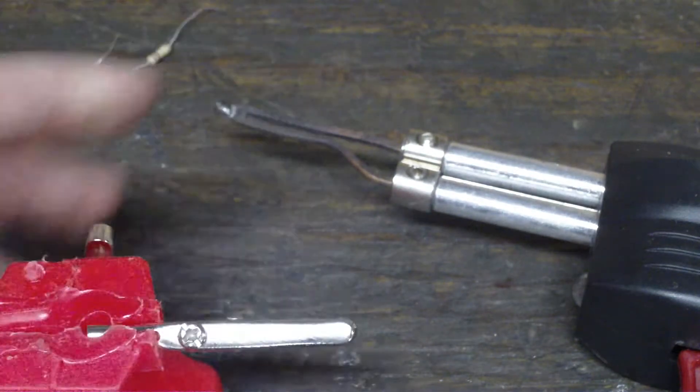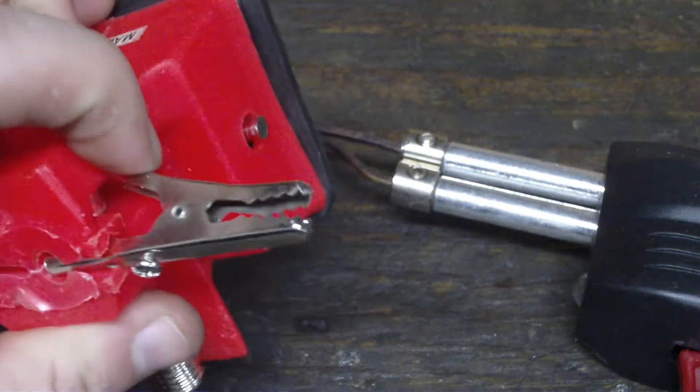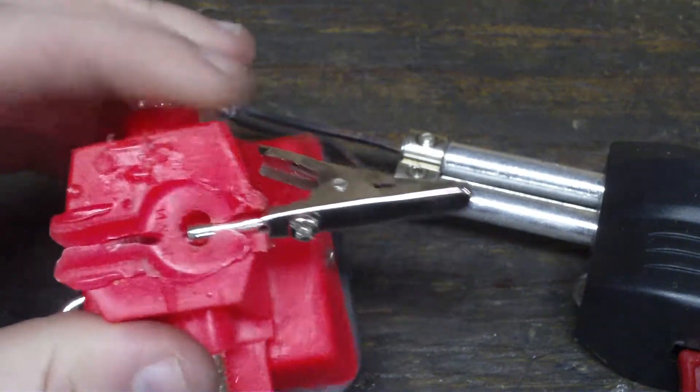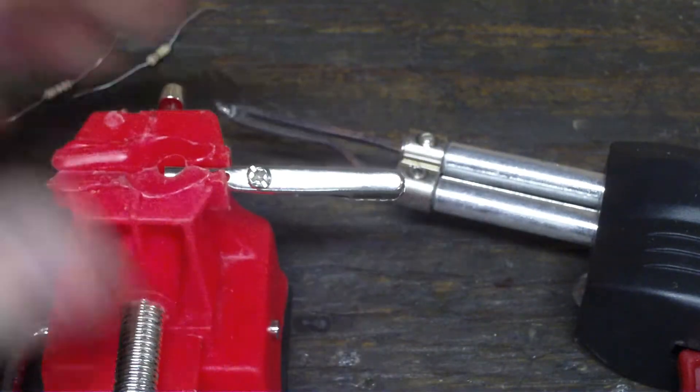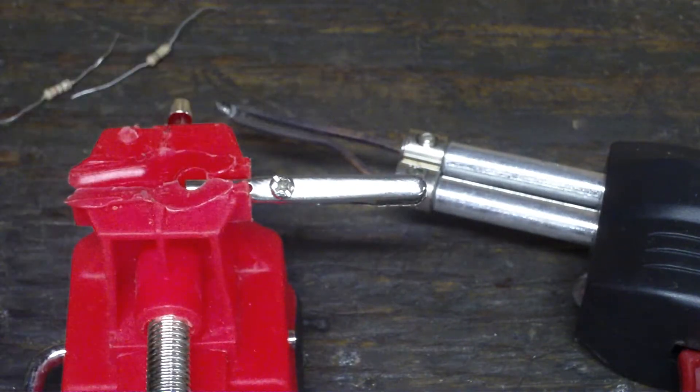Now I prefer to use a little vise like this, and this is an alligator clip to hold whatever it is you're soldering. Makes it easier. As you can see, this has gotten hot quite a few times. I use it to repair guitar cords a lot. I'm always wearing out guitar cords, and it's cheaper to fix them than it is to replace them all the time.